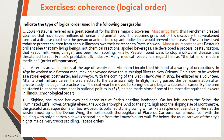We take the first one. Louis Pasteur is revered as a great scientist for his three major discoveries. Most importantly, this French man created vaccines that have saved millions of human and animal lives. The vaccines grew out of his discovery that weakened forms of a disease could help the person or animal build up antibodies that would prevent the disease. The vaccines used today to protect children from serious illnesses owe their existence to Pasteur's work.